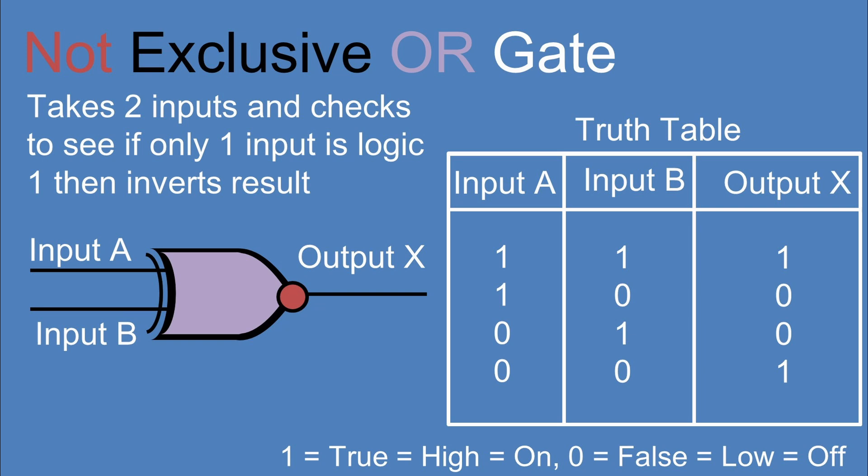If one of the inputs is a 0, then the other is a 1, it outputs a logic 0 or false or off state.